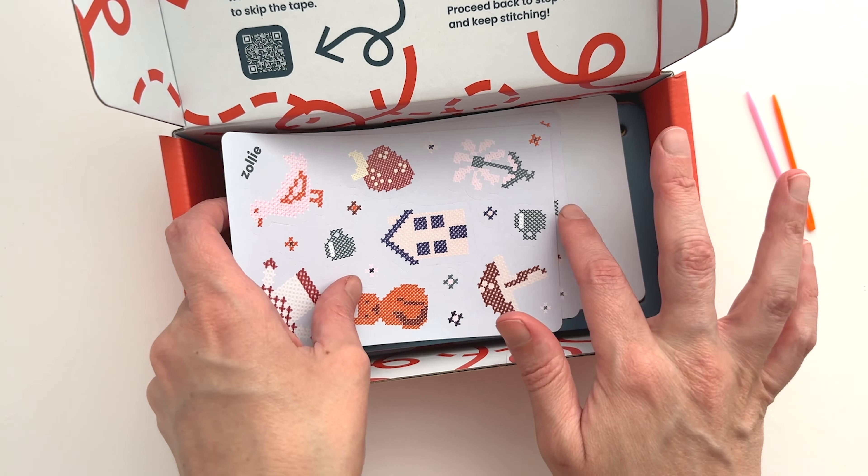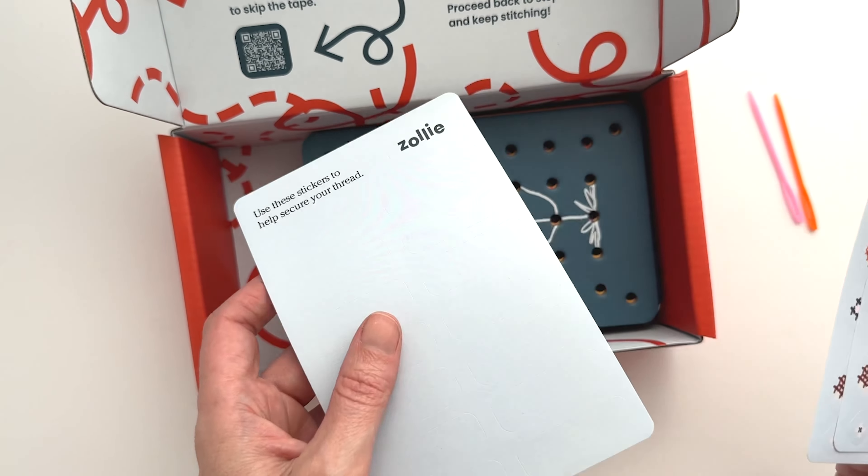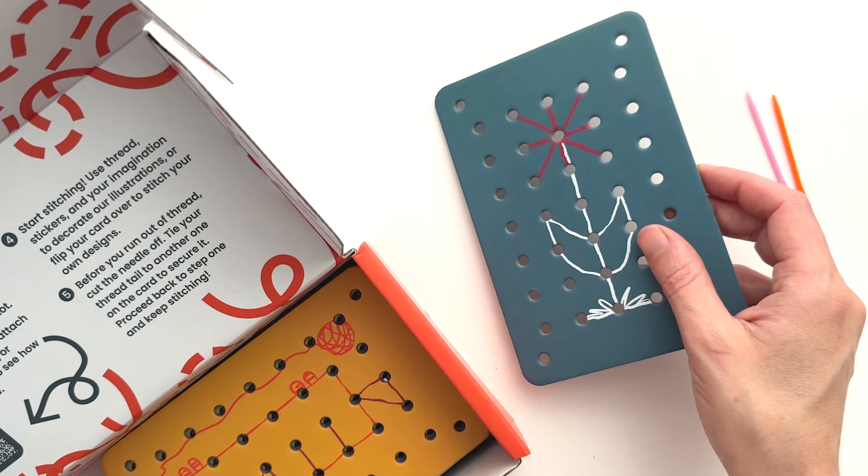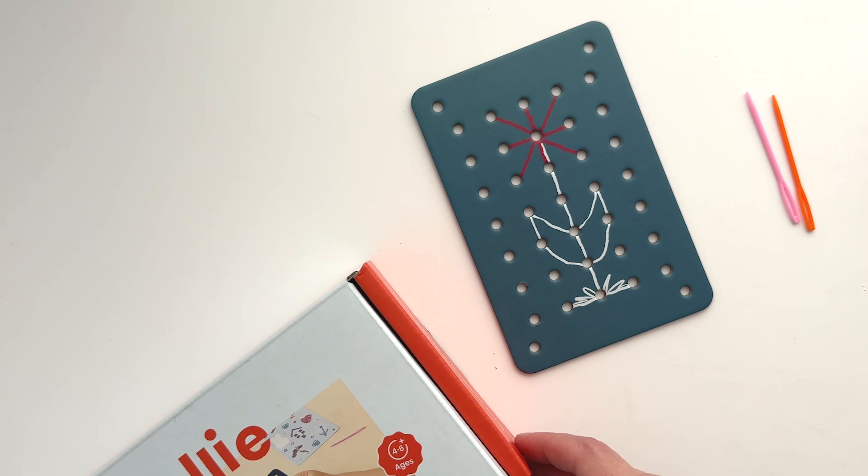Take your yarn out, your attachment stickers, and whichever card your child wants to stitch on.